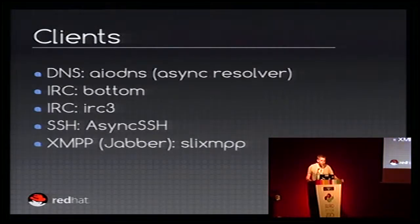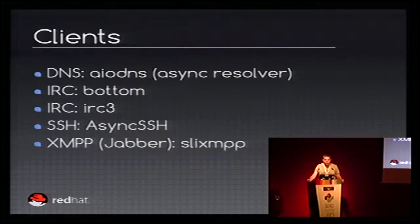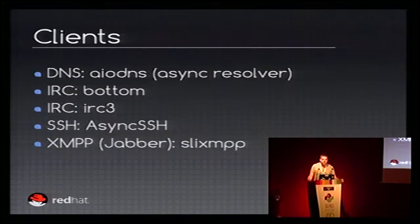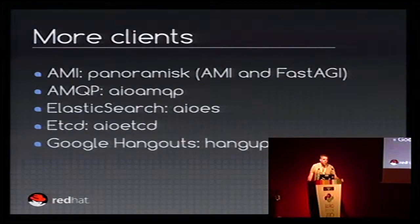For IRC, you have two libraries which are bottom and irc3. It's up to you to test both libraries and decide which API you prefer. For SSH, you have AsyncSSH, which is a library fully implemented in Python for SSH. So you have fine control over the SSH protocol and how the connection is established. For XMPP and Jabber, you have SleekXMPP, which is a fork of SleekMPP.